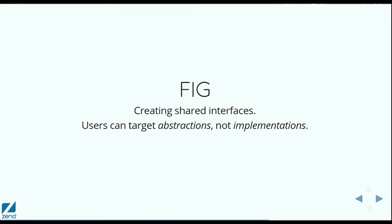And FIG is saying, let's create shared interfaces so that users can target the abstractions and not the implementations. That means somebody using a logger can just say I'm going to target PSR-3 and their interfaces, and I don't care what logger is actually used by the application consuming my code. PSR-7 is saying, I'm going to type-hint on these HTTP message interfaces, and I don't care what the application uses — I just want to consume it once it gets here. If they're targeting abstractions and not implementations, then they're no longer as worried about a framework.